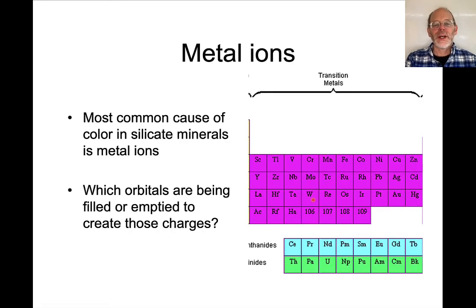Well, metal ions are some of the most common causes of color in silicate minerals. The transition metals occupy this part of the periodic table, and what's important here is that these are the elements that have 3D electrons.